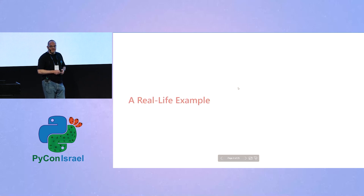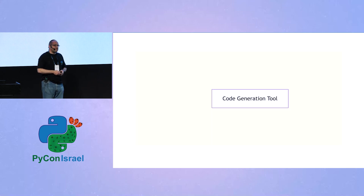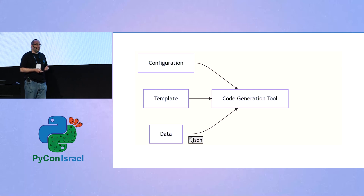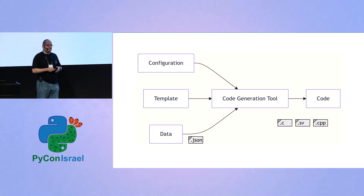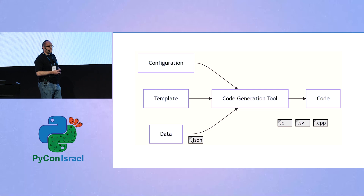Let's look at a real-life example from my day-to-day work at Intel. One of my jobs is to maintain a code generation tool written in Python. That tool takes some configuration, which tells it to take data and apply it to a template to generate code. It's a wonderful tool that helps us a lot, but it can be extended in multiple ways, which I'll use as my running example throughout this presentation.